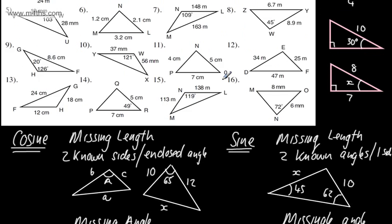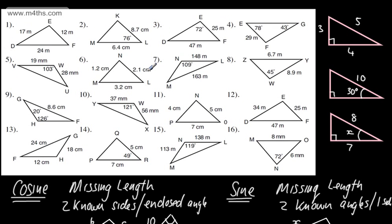In this video, we're just looking at these examples to identify which rule to use. In the next video, we'll look at some basic sine rule problems and introduce the sine rule. In the following video, we'll look at basic cosine rule problems. And in later videos, we'll look at the ambiguous case of the sine rule, and then combinations of the sine rule, cosine rule, trig ratios, and Pythagoras.